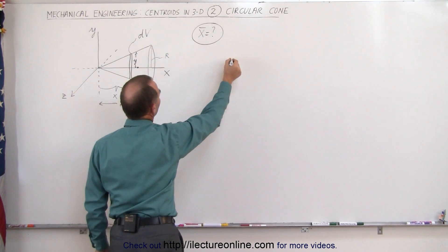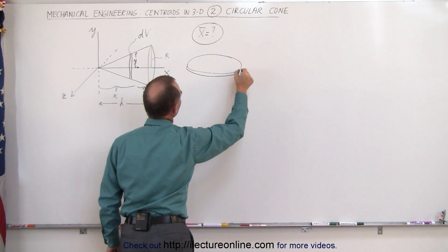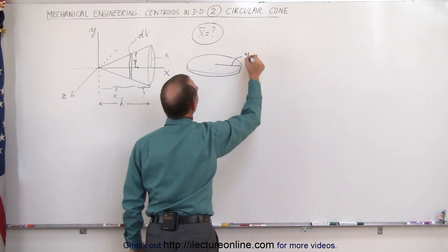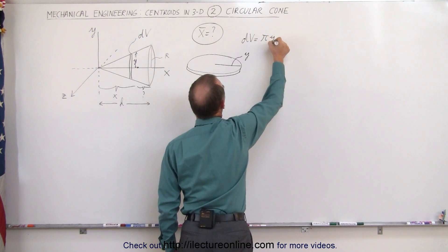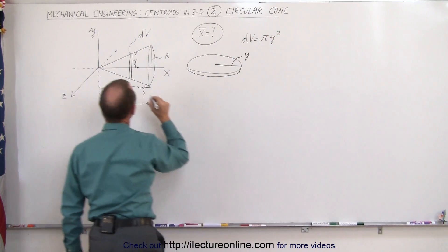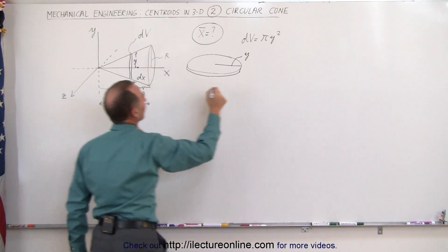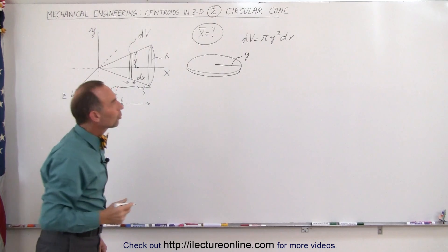If we take a look at what that slice looks like, something like this. That's a small little dv. The radius would be y. Therefore the dv would be equal to π times y² times the thickness and you can see that the thickness is actually small little dx. Therefore the dv will be πy²dx.